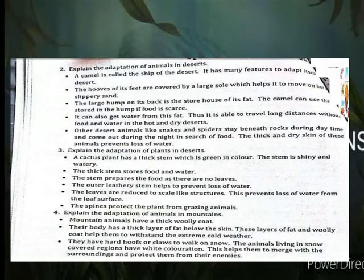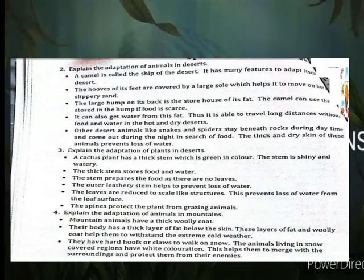Explain the adaptation of animals in the mountains. Mountain animals have a thick woolly coat. Their body has a thick layer of fat below the skin. This layer of fat and woolly coat help them to withstand the extreme cold. They have hard hooves to walk on the mountain. Animals living in snow-covered regions have white coloration, which helps them to merge with the surroundings and protect them from their enemies.